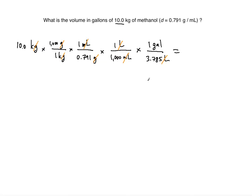So whatever you get you will round to three significant figures. So 10 times 1,000 divided by 0.791 divided by 1,000 divided by 3.785. What I'm getting in my calculator is 3.340085874.